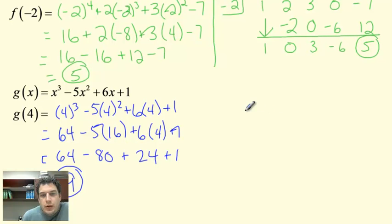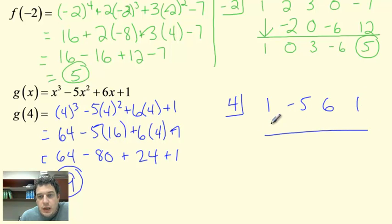We can now check by doing synthetic substitution. 4 goes in the box. And then we're going to write down our coefficients. 1, negative 5, 6, 1. We didn't add a 0 because we weren't missing any terms. Bring down the 1. 4 times 1 is 4. Negative 5 plus 4 is negative 1. 4 times negative 1 is negative 4. 6 plus negative 4 is 2. 4 times 2 is 8. 1 plus 8 is 9. And there's our method.